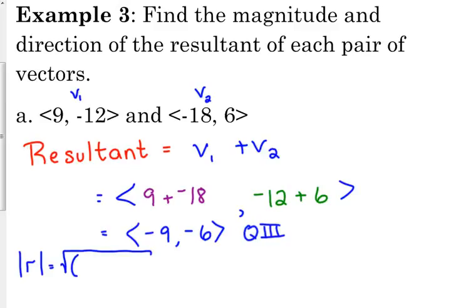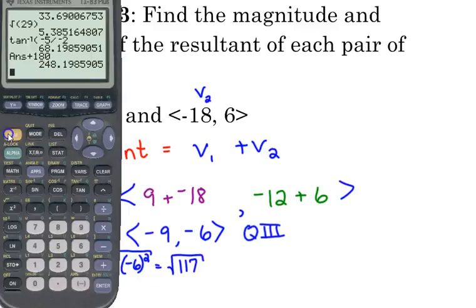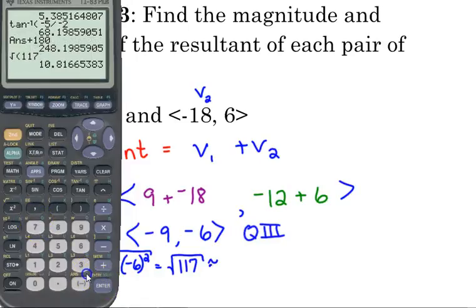That is equal to the square root of negative 9 squared plus negative 6 squared, which is 81 plus 36, which is 117. And if we get a decimal for that, it's approximately 10.81.